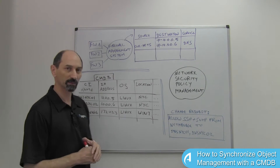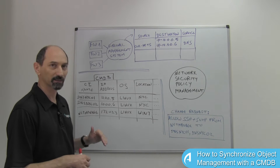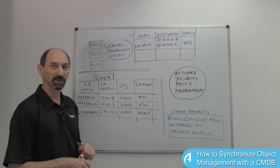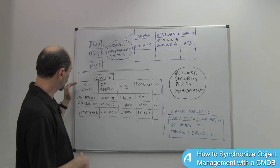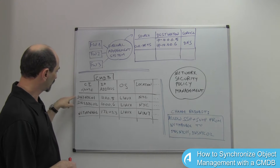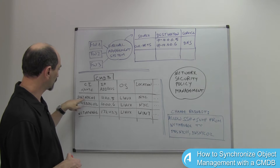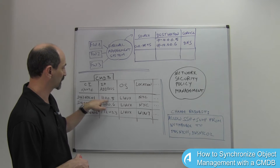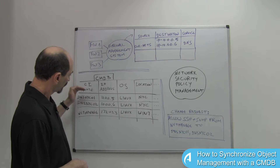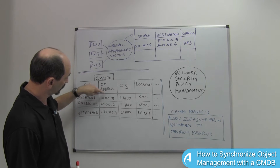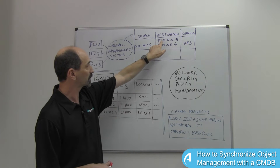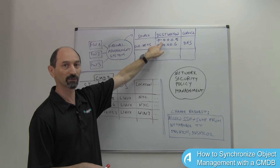In this configuration management database there are multiple configuration items that have a name, an IP address, and other various pieces of information describing that configuration item. For instance, DNSNYC01 has IP address 10.0.0.5, it's a Linux server located in New York City. You might notice that this IP address of this DNS server matches the IP address of this server over here in this rule.